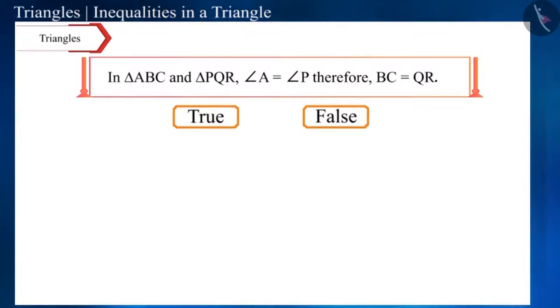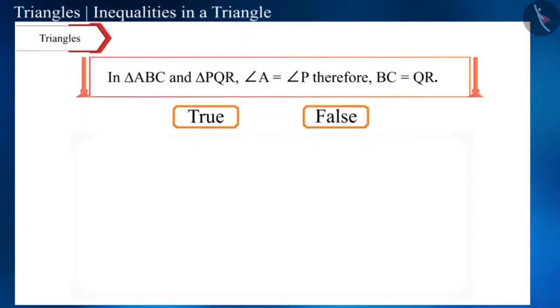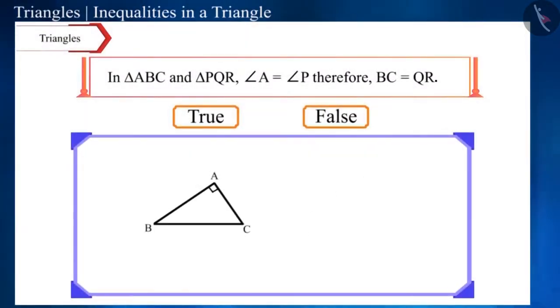You can also pause the video to answer this question. Friends, triangle ABC and triangle PQR are two different triangles. Just because their angles are equal, it doesn't mean the length of the sides of these triangles will also be equal.